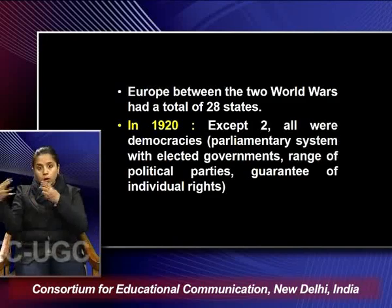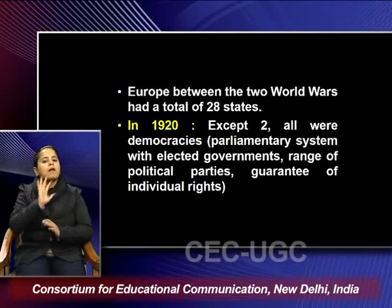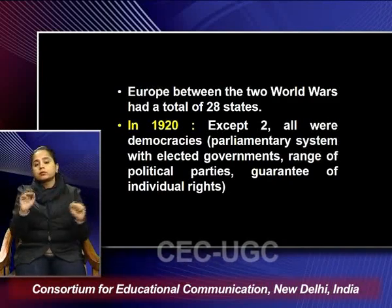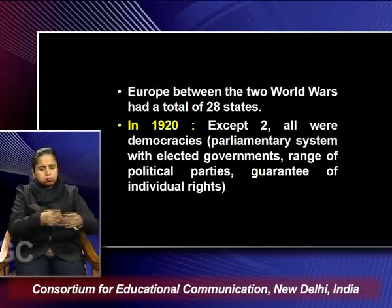Europe between the first two world wars had a total of 28 states. In the 1920s, all except two were democracies — parliamentary systems with elected governments, a range of political parties, and a guarantee of individual rights. So right at the finish of the First World War in 1920, of the total 28 states that Europe had, all were liberal democratic regimes guaranteeing the rights and privileges of parliamentary governance.